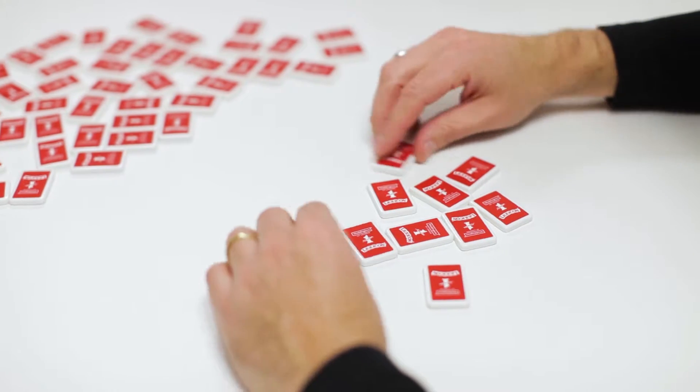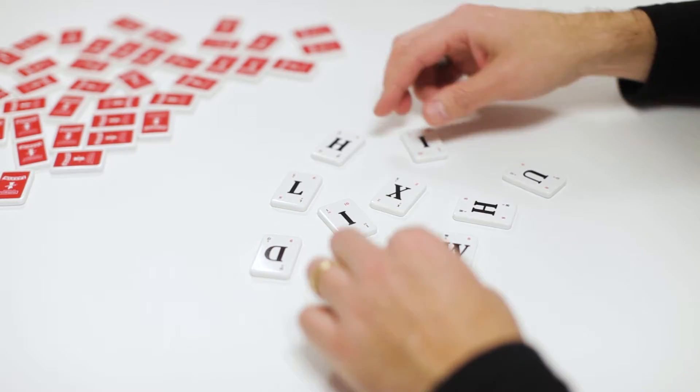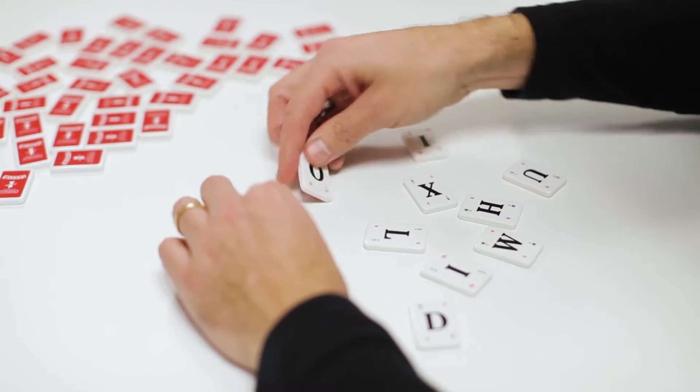How to win. Race to create words using all your letter tiles. Get rid of all your letter tiles first to take the round. Take five rounds to win.